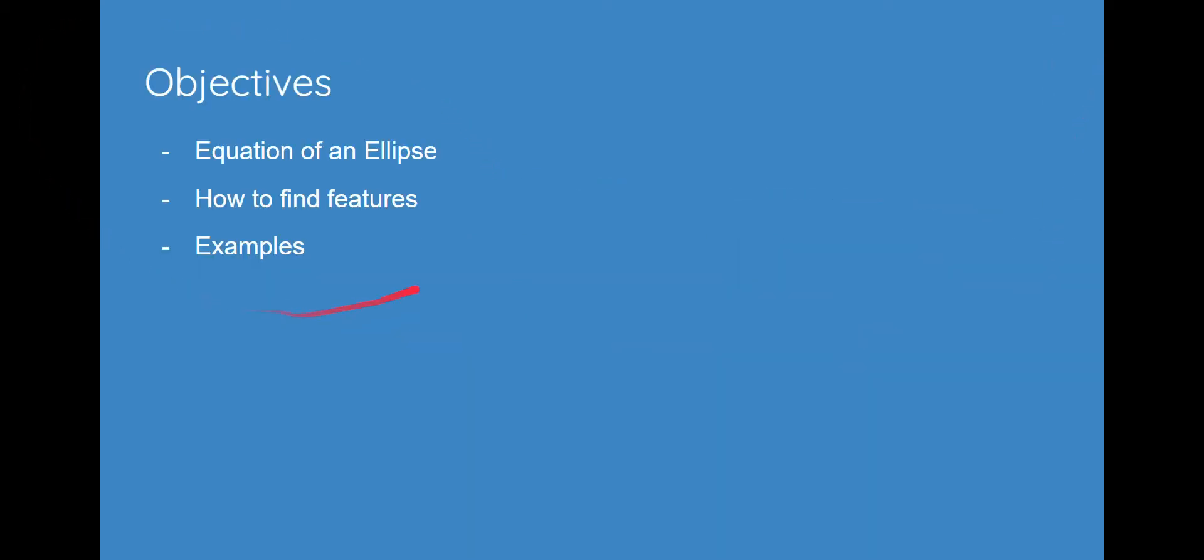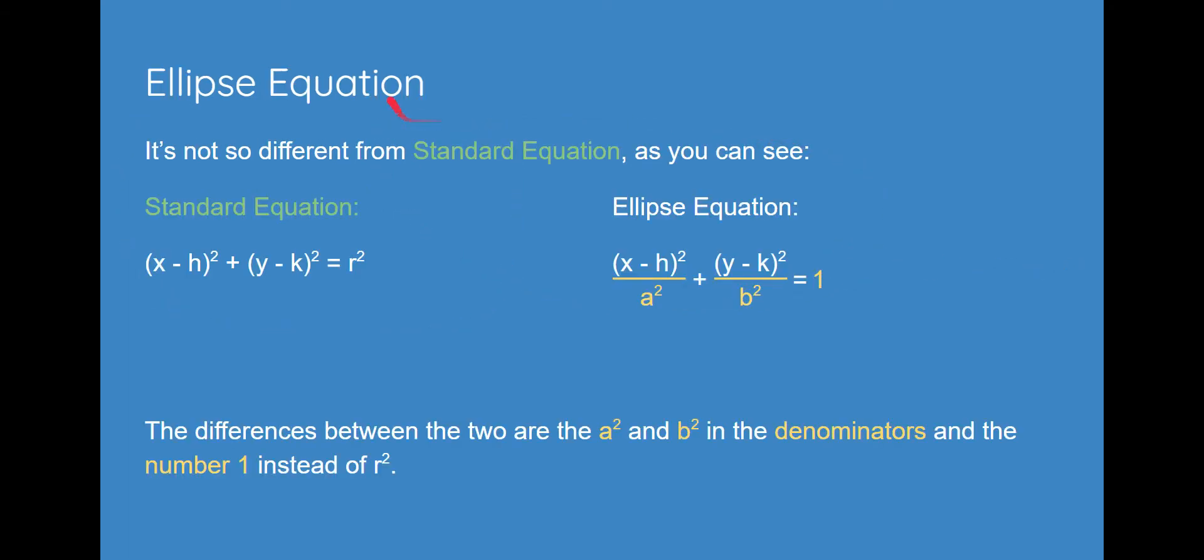So, here are today's objectives. The equation of an ellipse is not so different from standard equation, as you can see. The only difference is the a squared and the b squared in the denominators of these two terms, and on the other side, there's no longer an r squared. It has just become one.